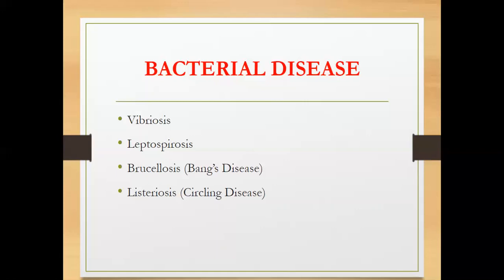Next we have brucellosis, or Bang's disease. Brucella abortus causes abortion in large ruminants. Other Brucella species include Brucella melitensis, found in sheep and goats, and Brucella suis, which causes brucellosis in pigs. The effects include abortion, retained placenta — which can cause sepsis if the placenta is retained — and reduced breeding efficiency, meaning the animal will eventually become less prolific.